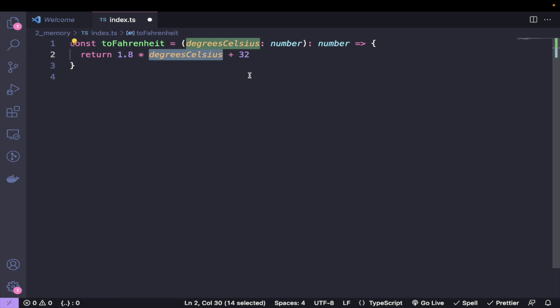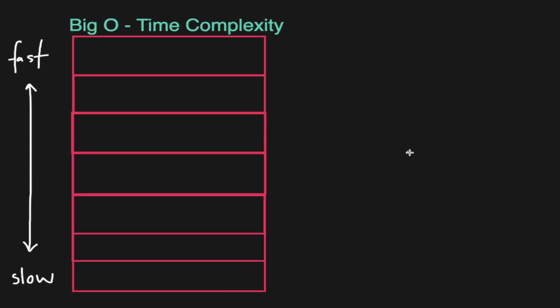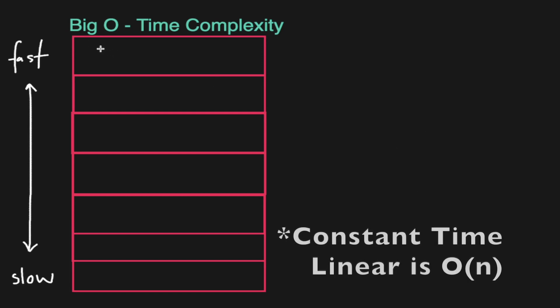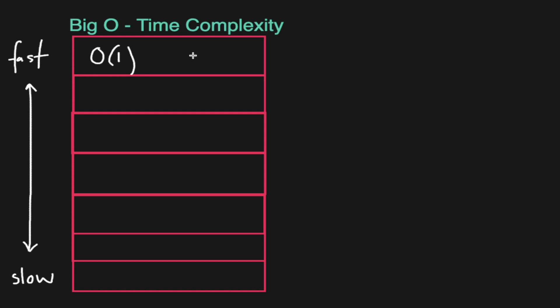Time complexity — we've simplified down. We're not considering all the operations independently; we're just simplifying to the number of times we need to access memory. We do need to access and look up just one bit of memory. So both the space and time complexity in this case are going to be constant time. It turns out O(1) is the fastest time complexity — we can't get any faster than one memory lookup.